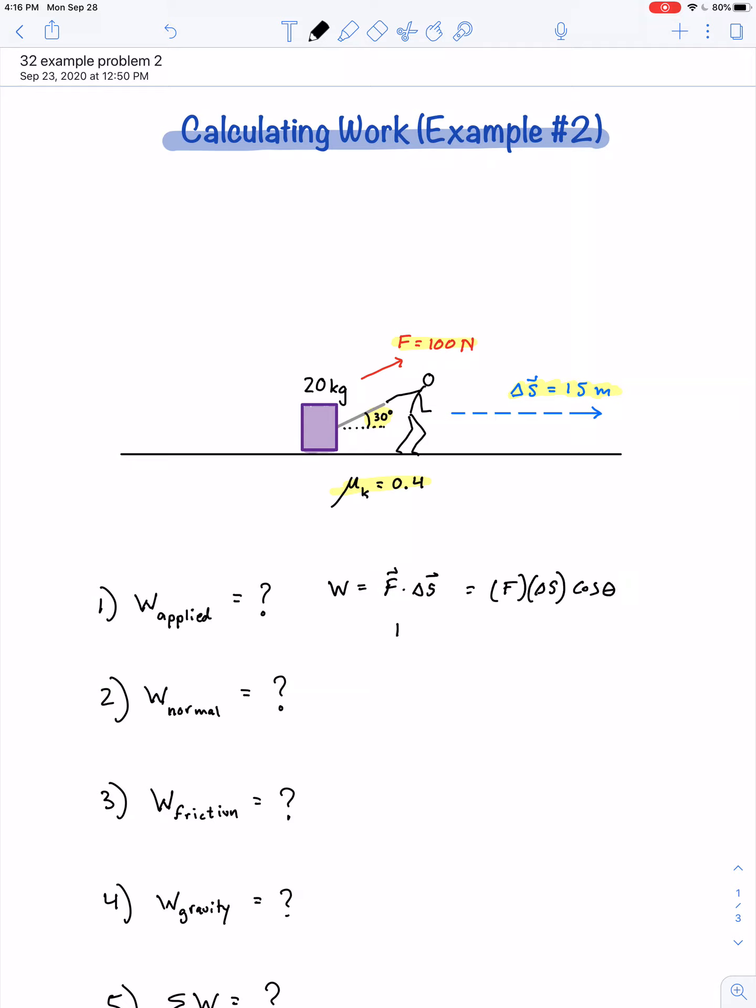In this case, it's a force of 100 newtons, a displacement of 15 meters, and the angle between those two vectors is 30 degrees. So the result we get in this case is about 1,300 joules.